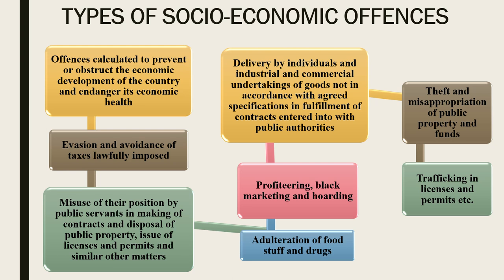The fifth type is profiteering, black marketing, and hoarding. Profiteering means selling anything at a rate in excess of the controlled price. Hoarding is storing anything in excess of the permissible quantity. Black marketing is illegal traffic or trade in officially controlled or scarce commodities. The sixth is adulteration of food and drugs, which has become a very common problem in India and other countries. The seventh is theft and misappropriation of properties or funds belonging to the public. The eighth and last is trafficking in licenses and permits.